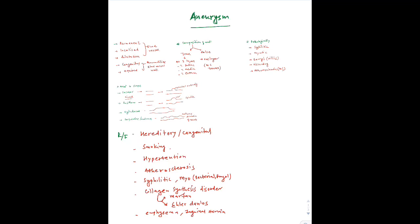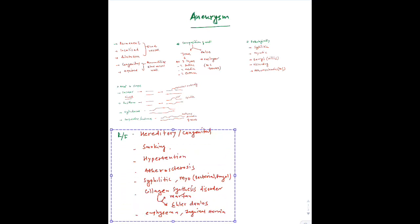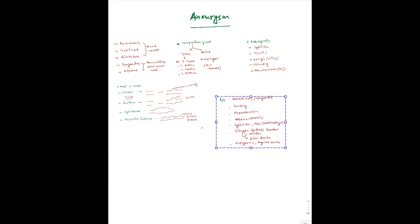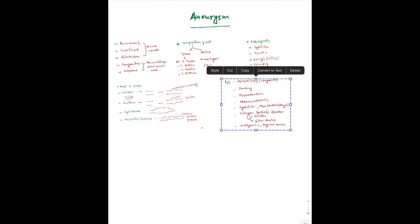So those were the risk factors for aneurysm. Now we will talk about some symptoms of aneurysm — what are the main symptoms?